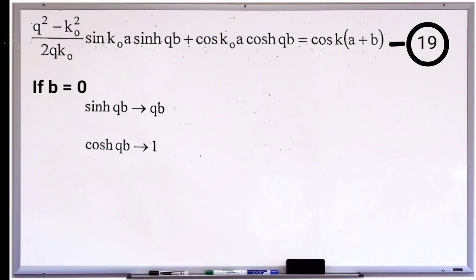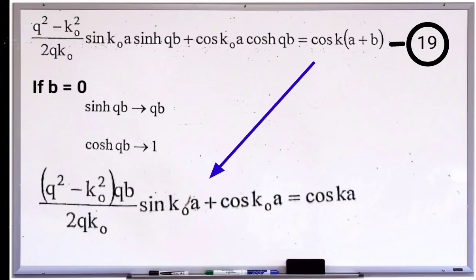By considering this, equation number 19 can be rewritten as (q² - k₀²)·qb divided by 2qk₀ into sin k₀a plus cos k₀a equal to cos ka. This can be taken as equation number 20.